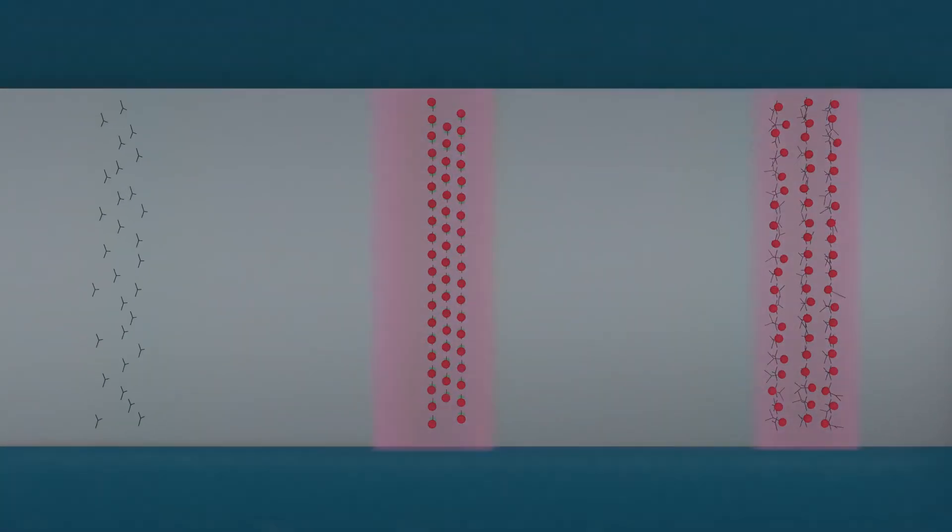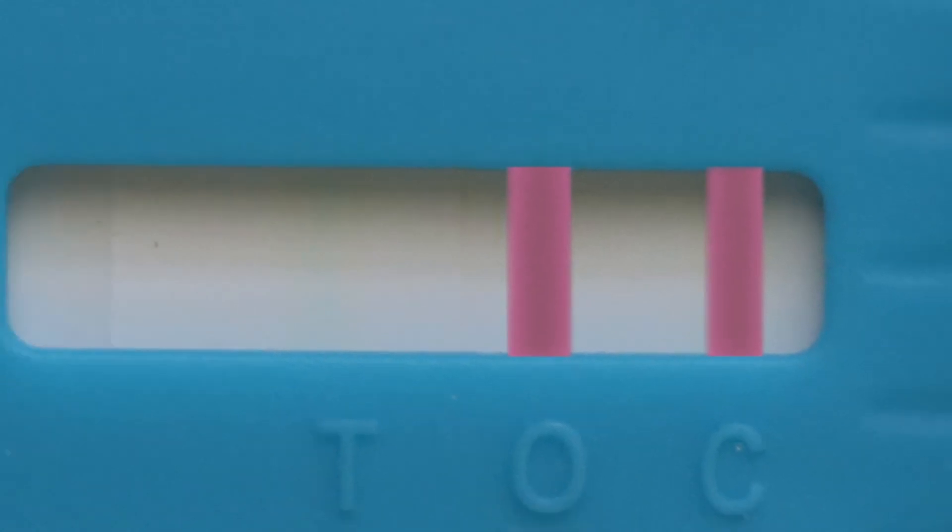That's why, in the case of a negative result, you will only see the control and overload lines develop.